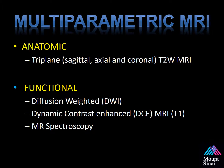A multiparametric MRI should include two groups of sequences: anatomic and functional. The anatomic is a triplane — sagittal, axial, and coronal T2-weighted images. The functional refers to diffusion-weighted imaging, dynamic contrast-enhanced MRI, and in some cases MR spectroscopy.